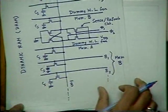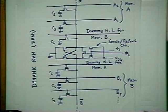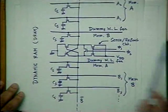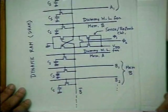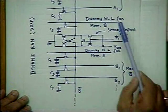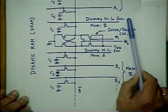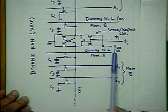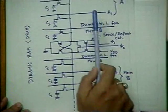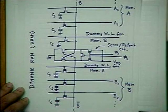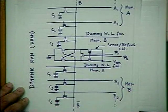In both planes — memory A side and memory B side — I have an additional word line, which I call a dummy word line for memory B. Similarly, there is a dummy word line for memory A. The reason for this will be discussed after some time.